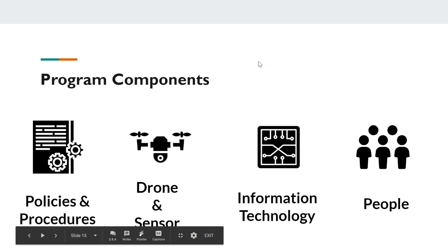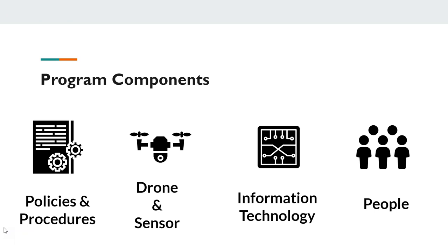Key components to consider for programs: first, policies and procedures — the legal requirements, but also what training someone needs before operating, what metadata and retention policies you need. Second, the right drones and sensors for your applications. Third, information technology — costs for data storage if you're doing a lot of flights could make the cost of drones look like a drop in the bucket, and your existing geospatial software may or may not work well depending on your analyses. And finally your people — not just those who fly drones, but those who do the analysis, those who approve flights, and risk management.